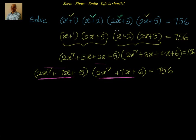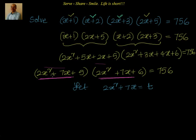If you try x plus 1 and 2x plus 3, you are not getting the same A and B values. So you rearrange them — by trial and error you will get it the second time. Now, let 2x square plus 7x equal to t. Then the equation becomes t plus 5 into t plus 6 equal to 756.